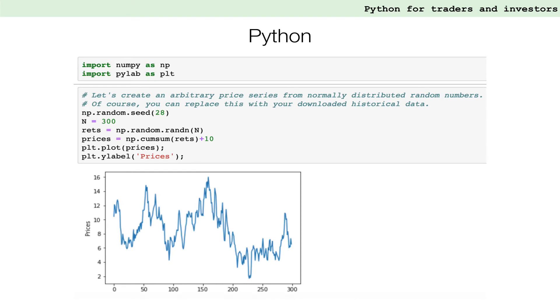To start with, we create an arbitrary price series from a normally distributed set of random numbers. Of course, you could also use market data from your favorite instrument. It doesn't matter so much here as we are focused on calculating strategy P&L curves.